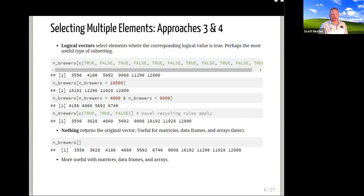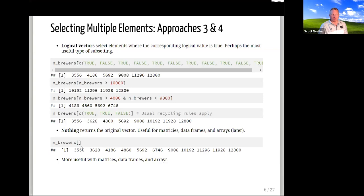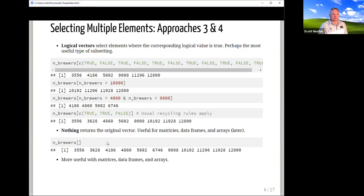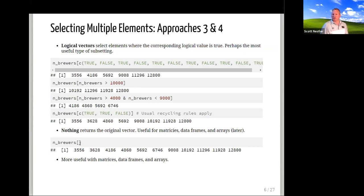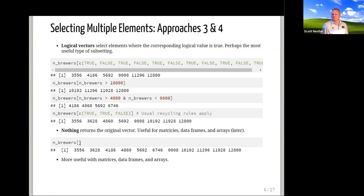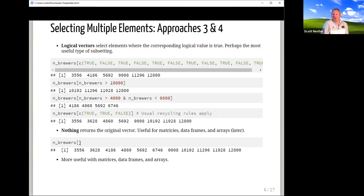The fourth type is nothing — using empty brackets — which just gives you back the original vector itself. The book mentions it's useful for matrices, data frames, and arrays. In the case of a simple vector, it probably isn't as helpful. I asked if anyone knows a use case where you'd really want to do that rather than just using the original vector itself, and no one could think of one.